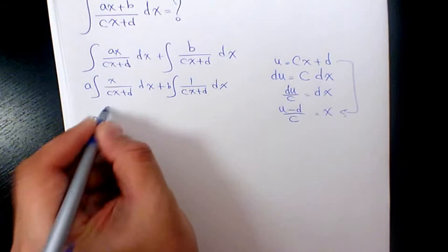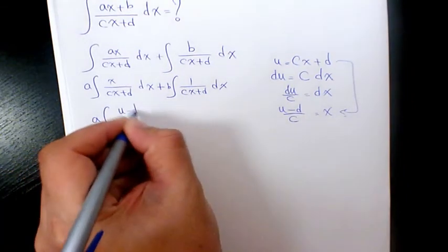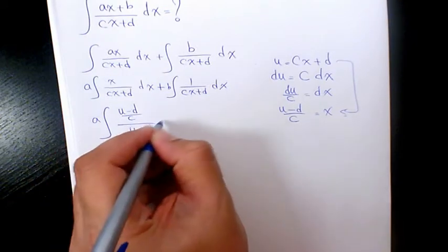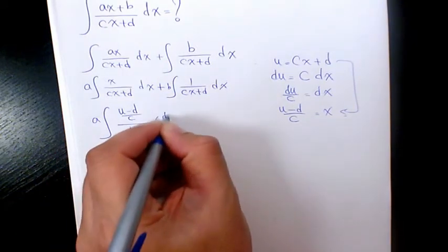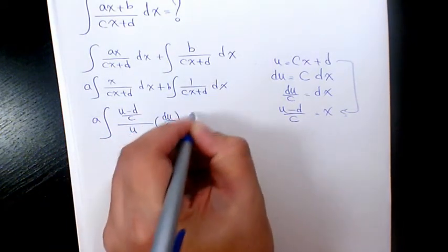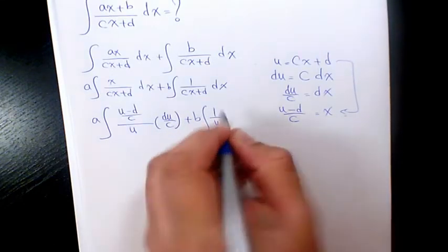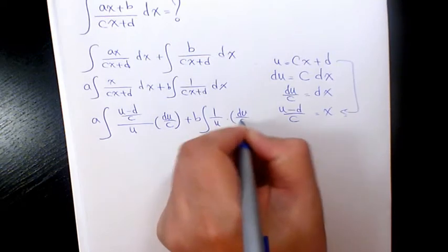It's going to be a times u minus d over c, divided by u, times du over c, plus b times 1 over u times du over c.